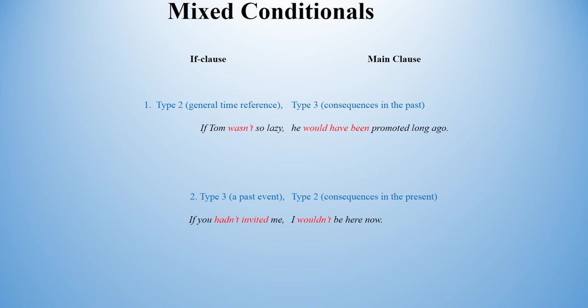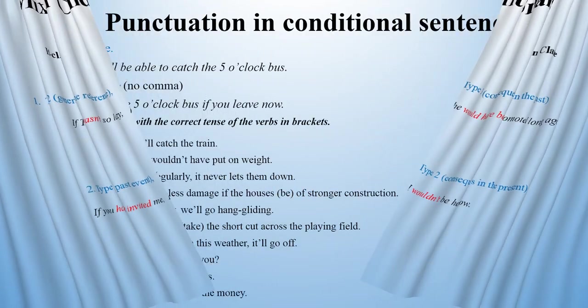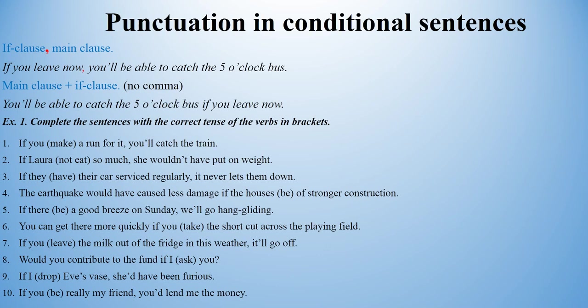Speaking about conditionals, special attention should be paid to punctuation. For example: 'If you leave now, you'll be able to catch the 5 o'clock bus' and 'You'll be able to catch the 5 o'clock bus if you leave now.' We only put a comma between the clauses if the conditional clause comes first, like in the first example. However, if the conditional clause comes after the main clause, you shouldn't put any commas.